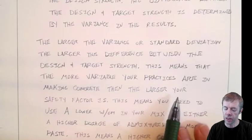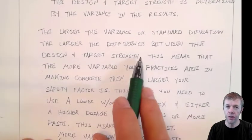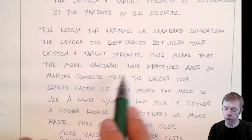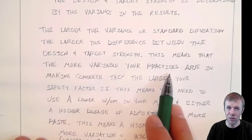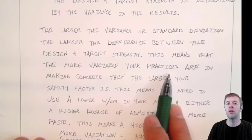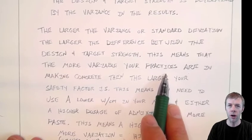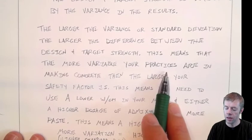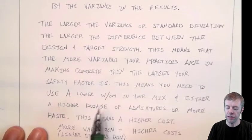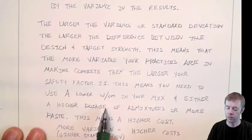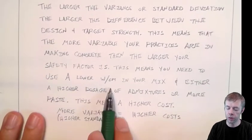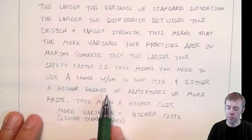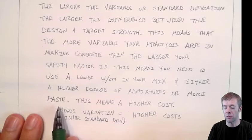The larger the variance or the standard deviation, the larger the difference between the design and the target strength. This means that the more variable your practices are, if you're not really consistent on how much material you put inside your concrete or how you test it or cure it or sample it, this is going to require your safety factor to be larger. This means you're going to need either a lower water to cement ratio in your mix, you might need higher dosage of admixtures, you may need more paste, more cement.